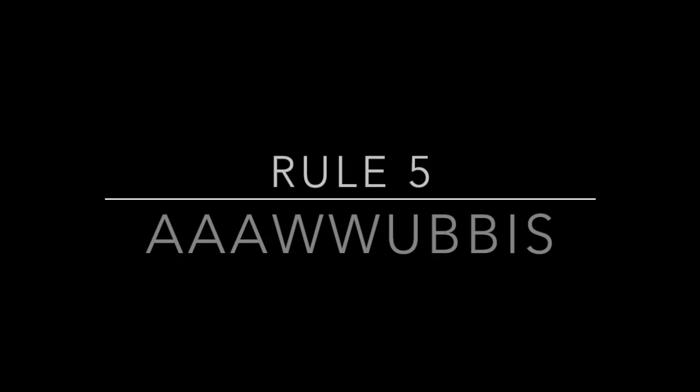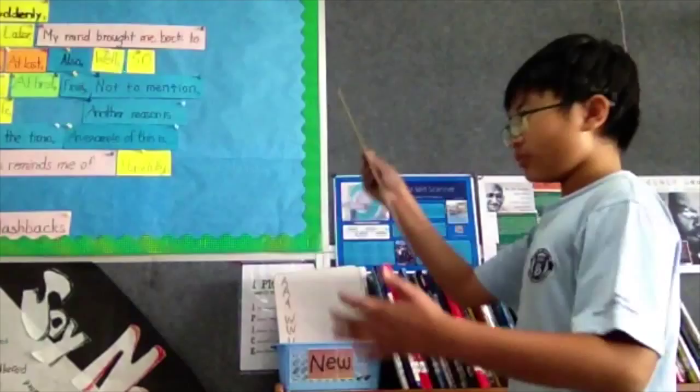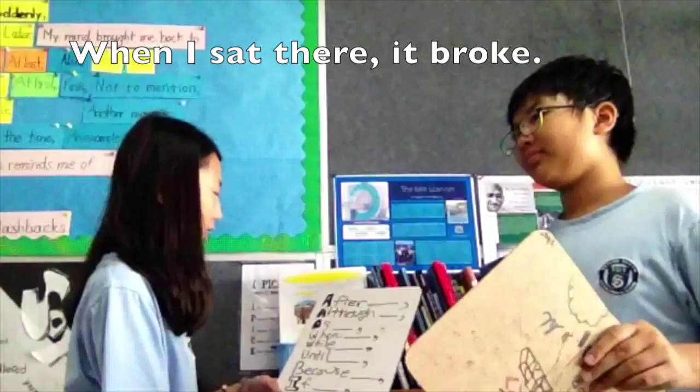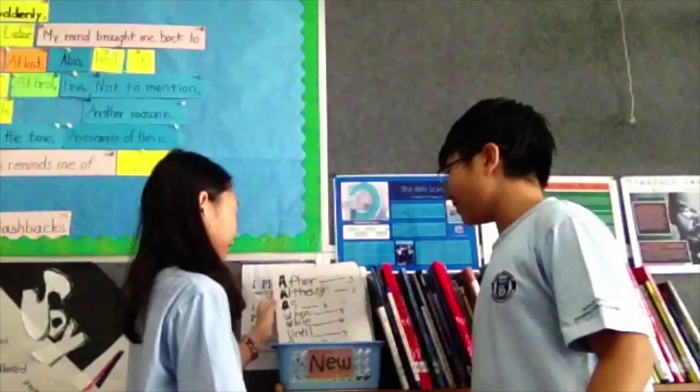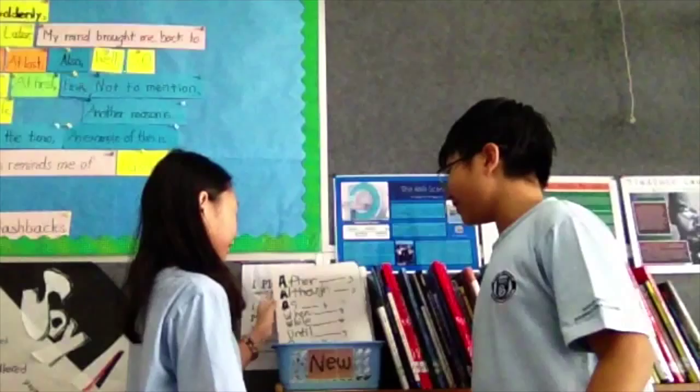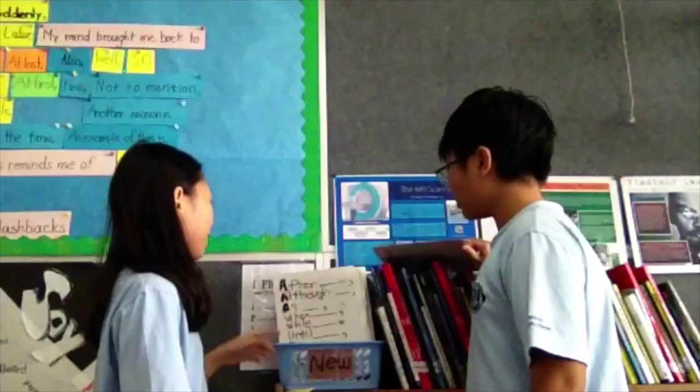What is this? AWUBIS stands for: after, although, as, while, until, because, if, in, since. I still don't get it. I'll give you a good example. After — you put something after 'after,' then a comma. So you don't put the comma just after 'after'; you say 'after that,' then comma. Now I get it.